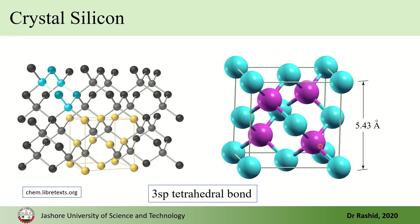These are all sp³ tetrahedral bonds — hybridization of the 3s and 3p orbitals. The length of each bond is 2.35 ångströms, and the separation between any two adjacent atoms is 2.35 ångströms. The separation across the structure between next-neighbor atoms is 3.53 ångströms.